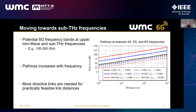That can be done using more directive links — higher gain and directness to compensate for the extra path loss. The figure shows some arbitrarily chosen examples at 4G, 5G, and 6G frequencies with representative gain values. Indeed, if we have good enough gain performance, then we can really boost the link performance.